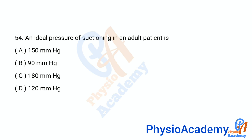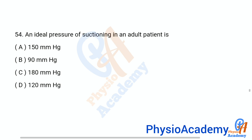Question 54: The ideal pressure of suctioning in an adult patient is — Option A: 150 mmHg. Option B: 90 mmHg. Option C: 180 mmHg. Option D: 120 mmHg. The correct answer is option D, 120 mmHg.